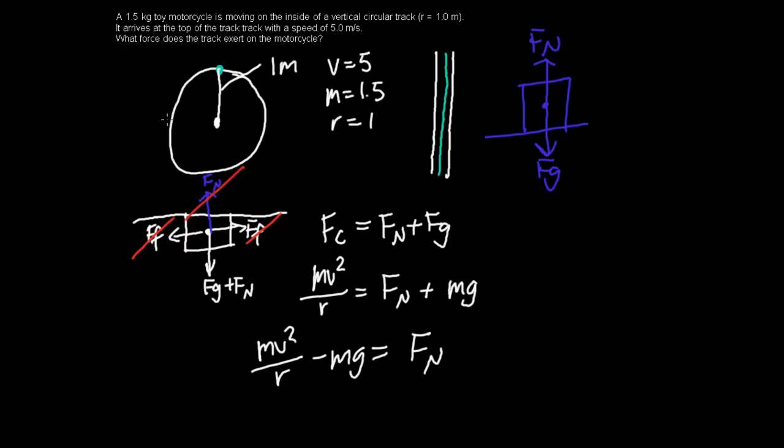And we just plug in our mass, velocity, and such to get our normal force. So it would look like 1.5 times 5 squared over 1 minus 1.5 times 9.8, since we are on Earth, equals your normal force. And for normal force, we should get 22.8 newtons.